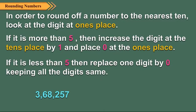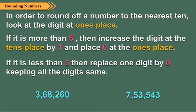Let us see the examples. Here, seven is greater than five, so replace the one's digit by zero and increase the tens digit by one. Here, three is less than five, so replace the one's digit by zero only.